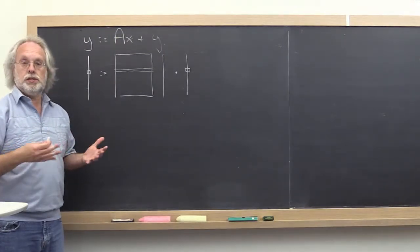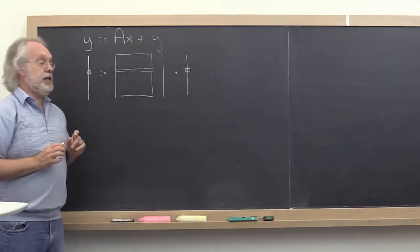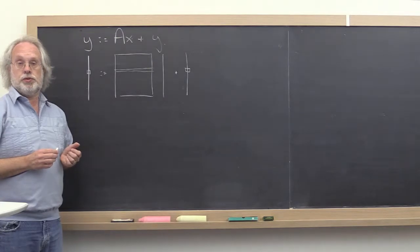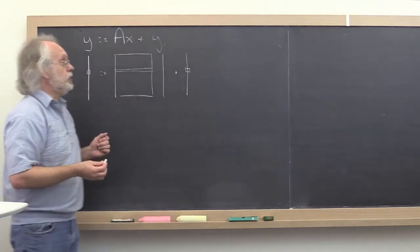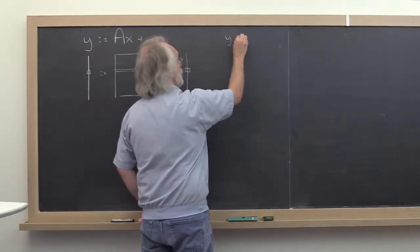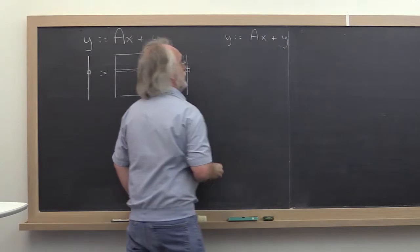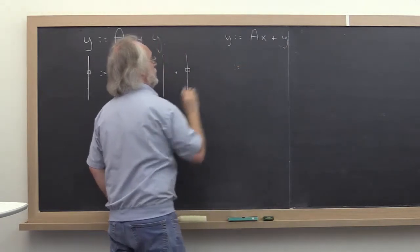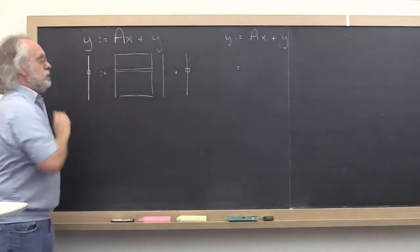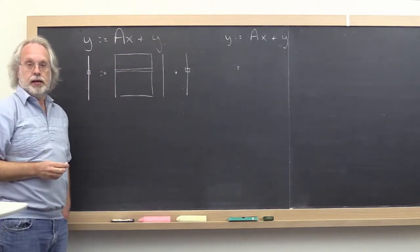What we want to do is capture how we visually explain it using the notation you were introduced to earlier. And how do we do that? Well, we can say Y becomes A times X plus Y. And we can say when we explain it like this we're inherently thinking of A by rows.